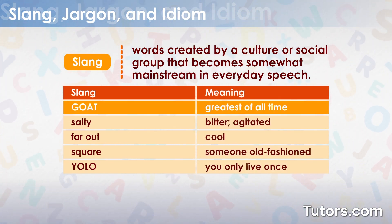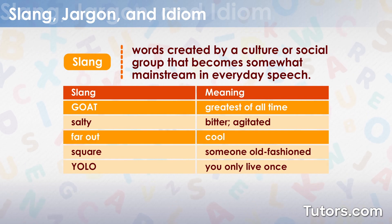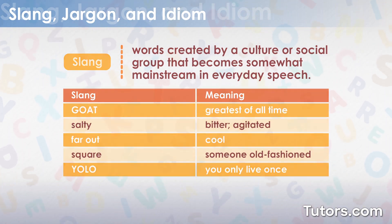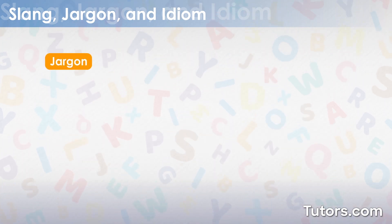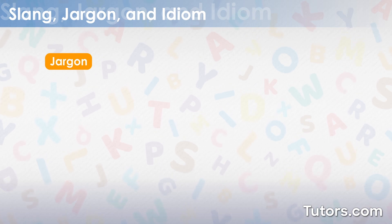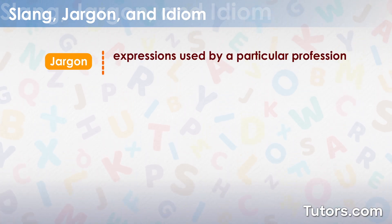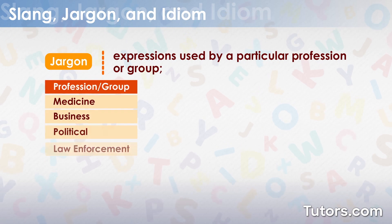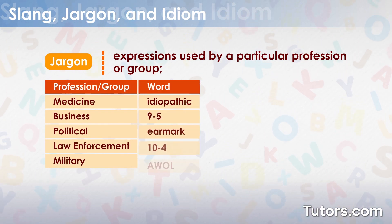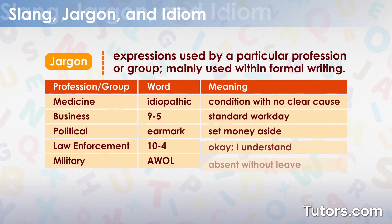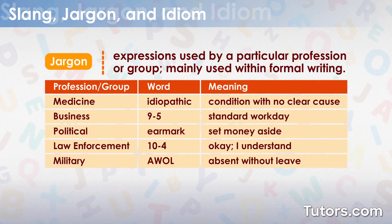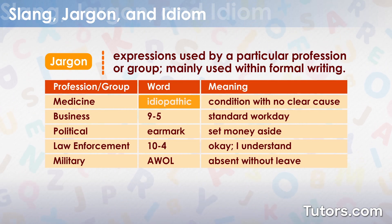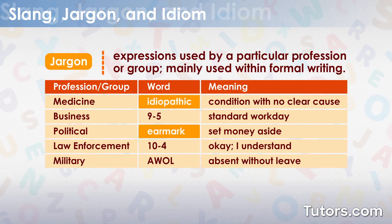A few examples of slang are goat, far out, and yolo. Jargon references words or expressions used by a particular profession or group. Unlike colloquial language, jargon is mainly used within formal writing. Examples include idiopathic and earmark.